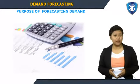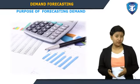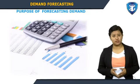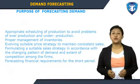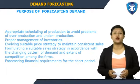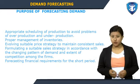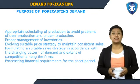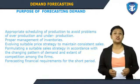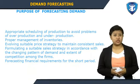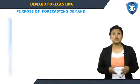It is difficult to define short-run for a firm because its duration may differ according to the nature of the commodity. Short-term forecasting can be undertaken for the following purposes: appropriate scheduling of production to avoid over-production and under-production, proper management of inventories, involving suitable price strategy to maintain consistent sales, formulating a suitable sales strategy in accordance with the changing pattern of demand, and forecasting financial requirements for the short period.